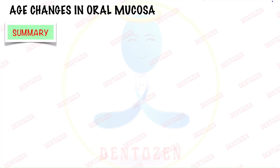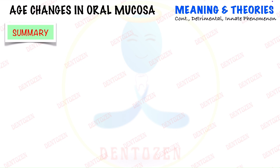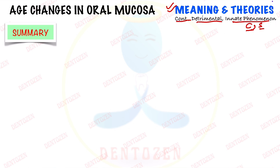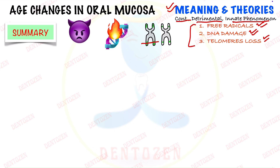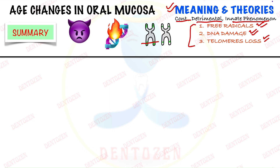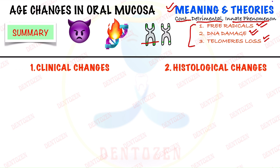To summarize, when writing an exam answer on age changes in oral mucosa, start by describing aging: it is a continuous, detrimental, innate phenomenon that occurs in a constant and steady way, is time-related, starts from birth, and continues till death. Three theories of aging are given: first, damage due to free radicals; second, damage to DNA because the repair mechanism becomes faulty; and third, loss of telomeres present on the ends of chromosomes.